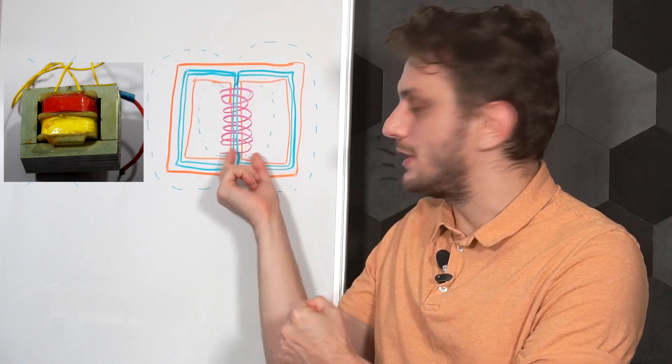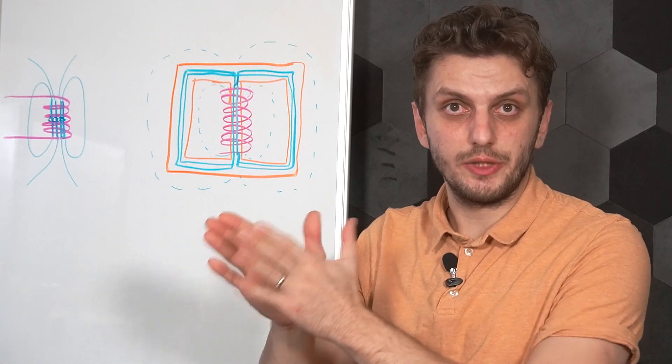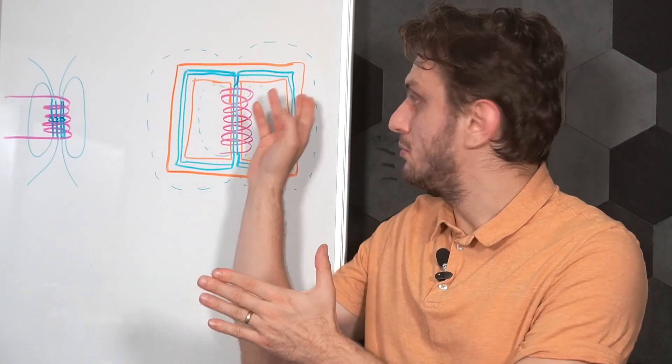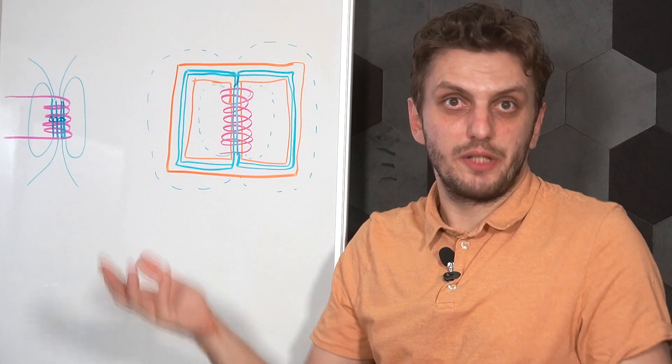On the inside of the inductor, you have the inductor forcing the field lines through there, but on the outside, field lines can close wherever they want.